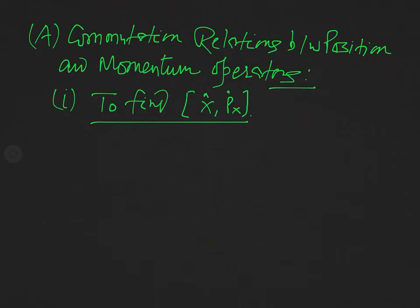The position operator x̂ means multiplication by x, and the momentum operator p̂x is defined as minus iħ times d/dx. Here I have not taken the partial derivative because this is the one-dimensional case, so del is replaced by d. Now we will find the commutator of x̂ with p̂x.